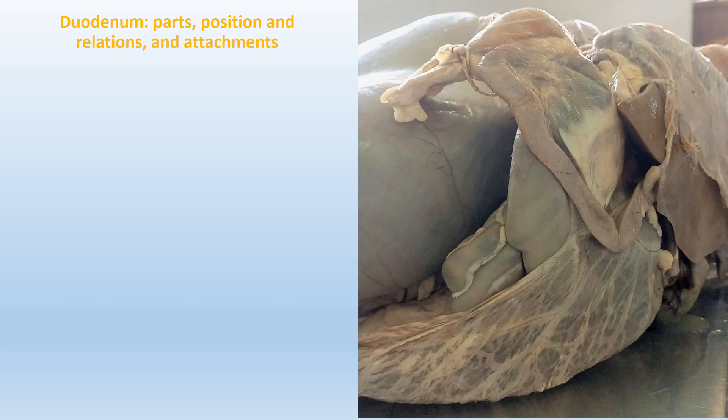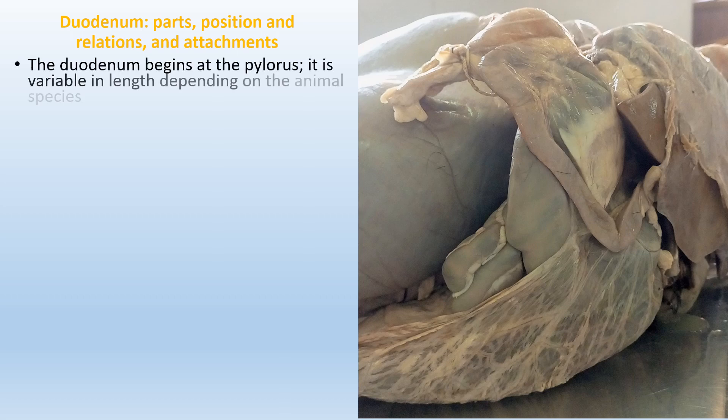I will now describe the anatomy of the first segment of the small intestine, which is the duodenum — its different parts, position, relations, and attachments to various structures. The duodenum begins at the pylorus, which is the end of the abomasum. It is variable in length depending on the animal species; for example, in the cow or ox it is about one meter in length.